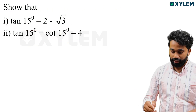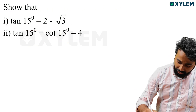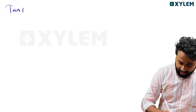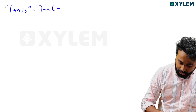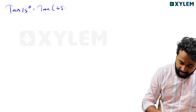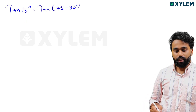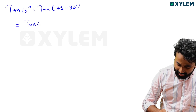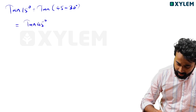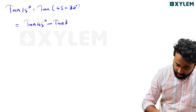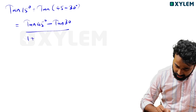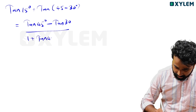Find tan 15 degrees. The method: tan 15 degrees — you can convert this to tan of 45 minus 30. Using the formula tan x minus tan y divided by 1 plus tan x into tan y.